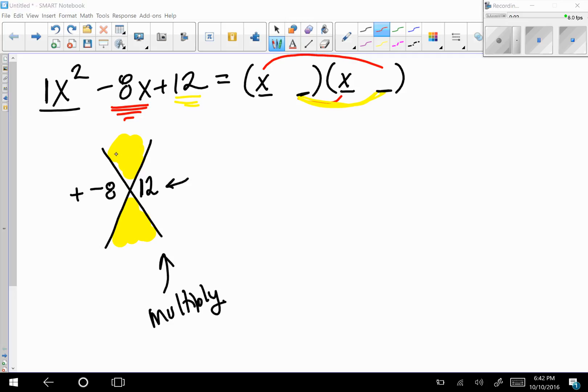That should be negative 6 and negative 2. So this gives us (x - 6)(x - 2).